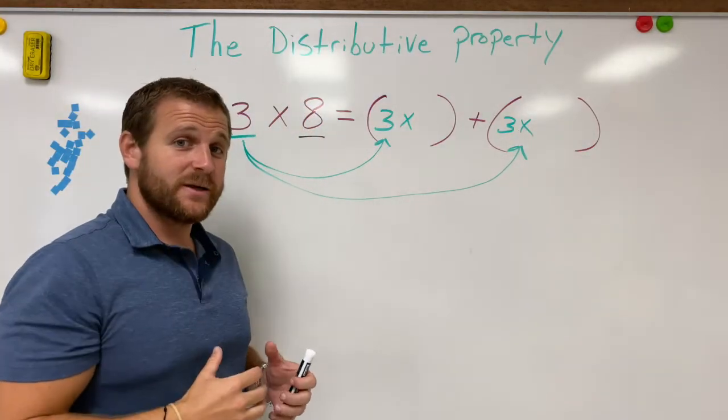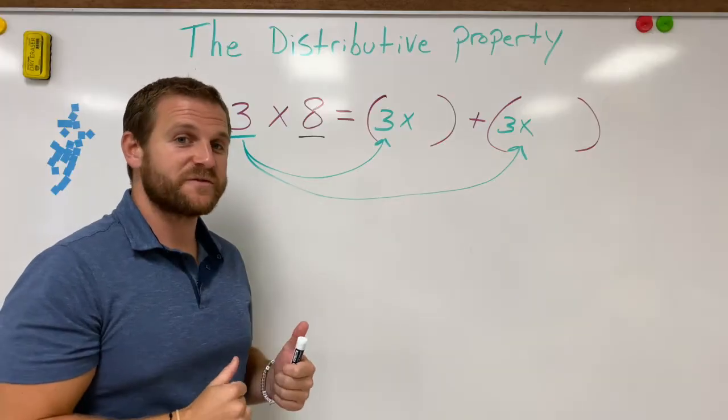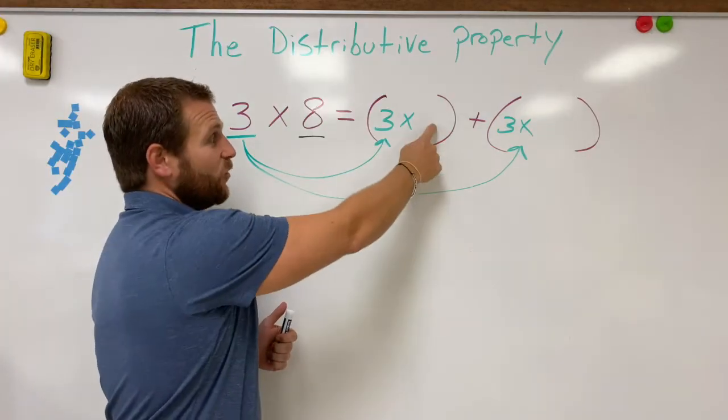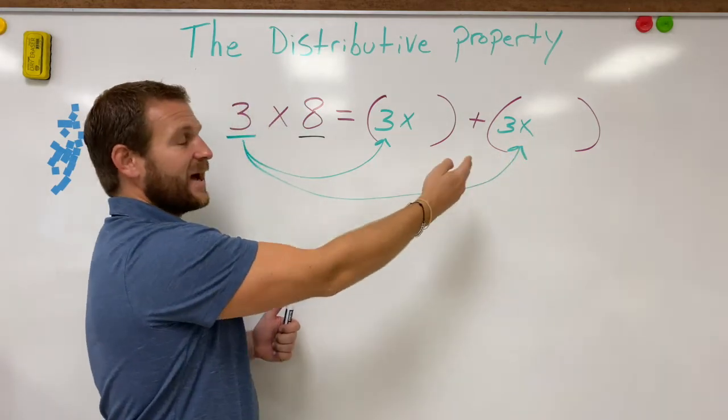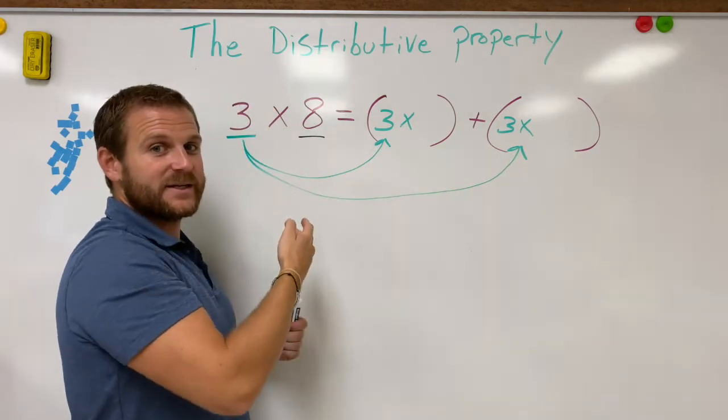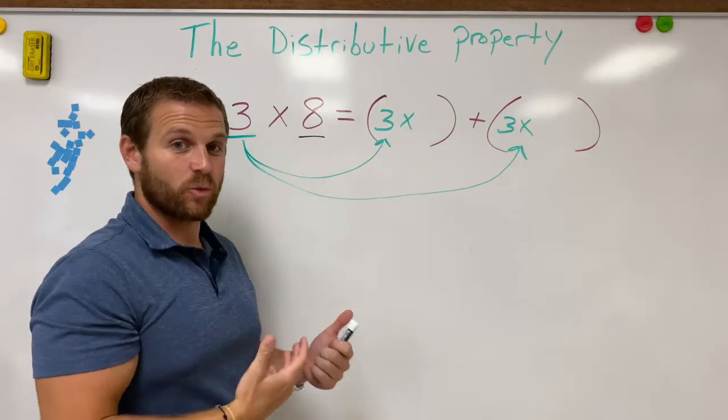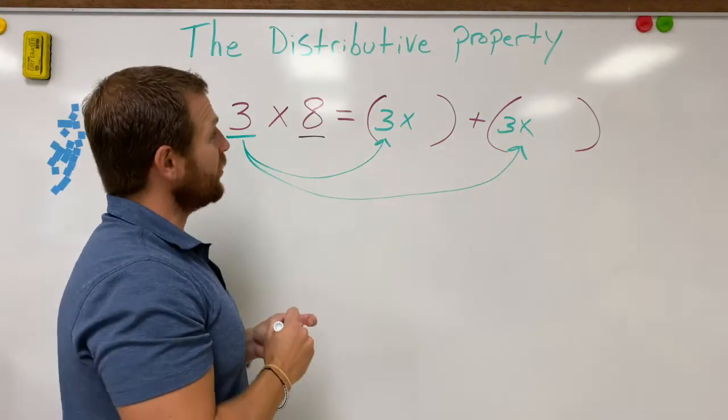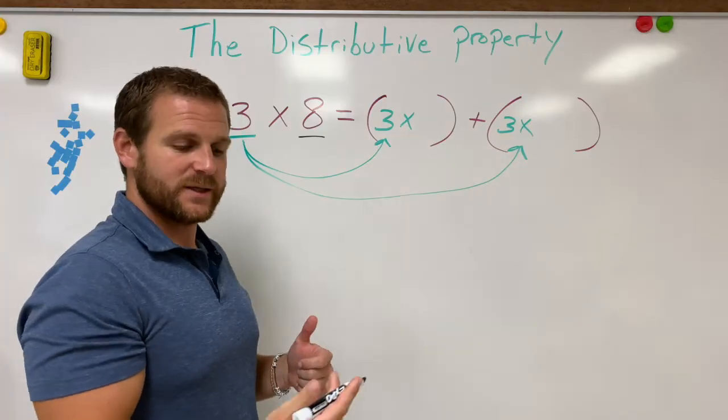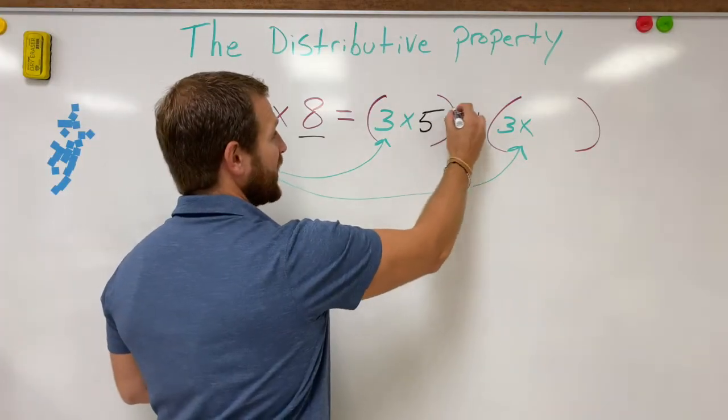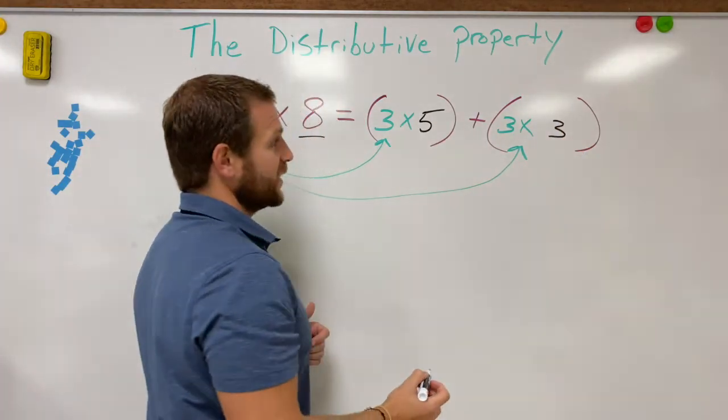Now this is where it gets a little bit tricky, but there's some real simple rules to follow. When I'm bringing the eight over, this digit here and this digit here, both have to add back up to eight to allow the distribution property to work properly. So I'm going to pick five and three. Five plus three equals eight. So I put my five and my three over here.